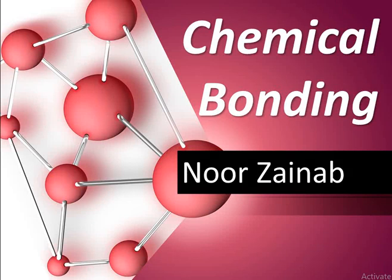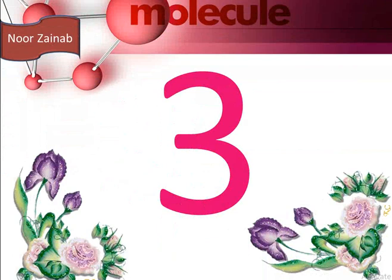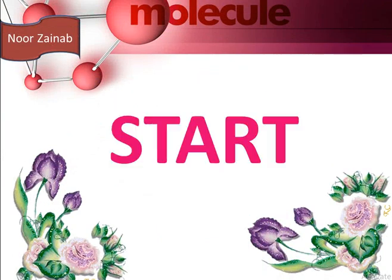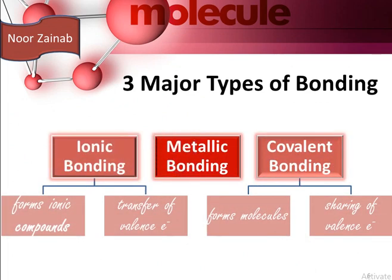Today we are going to discuss a very interesting topic of chemical bonding which includes metallic bonding, covalent bonding, and ionic bonding. Basically there are three major types of bonding: number one, ionic bonding which involves the transfer of valence electrons and it forms ionic compounds; number two, metallic bonding; and number three, covalent bonding which involves the sharing of electrons.